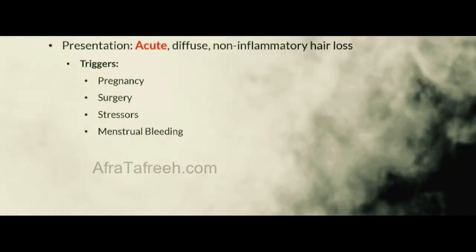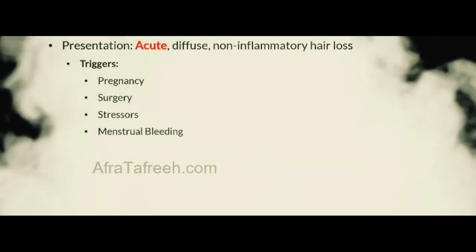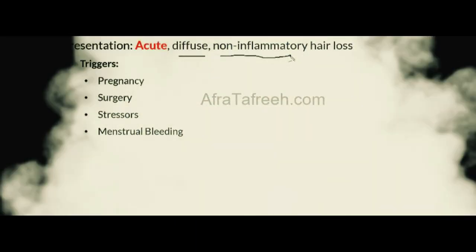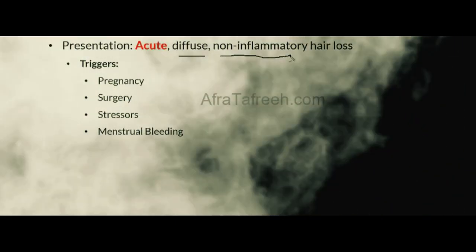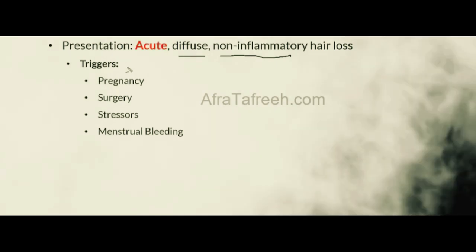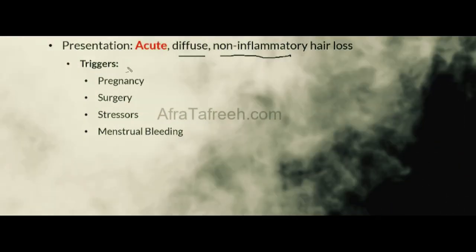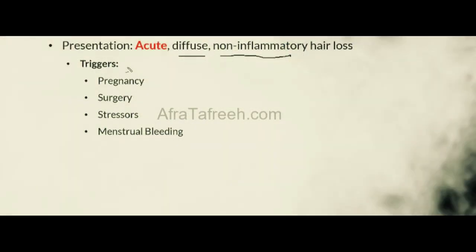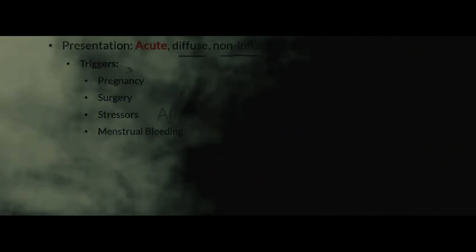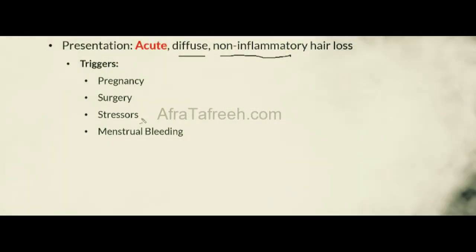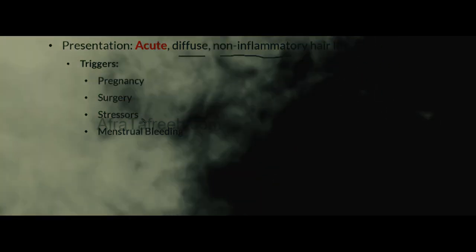The first condition is telogen effluvium. Our classic patient is going to be a young or middle-aged woman who presents with acute, diffuse, non-inflammatory hair loss. The real key in the history of board vignettes for patients with telogen effluvium is the presence of triggers. Common triggers which show up on examinations include pregnancy, surgery, psychosocial stressors such as divorce or losing a job, as well as menstrual bleeding.